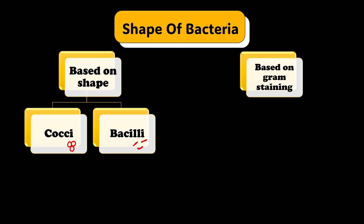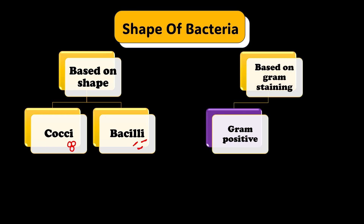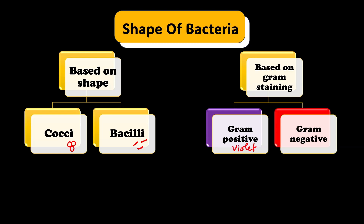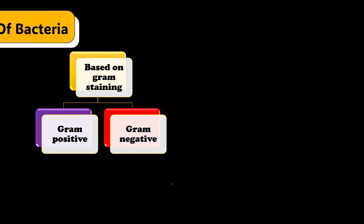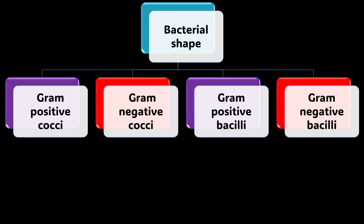We can also classify bacteria based on gram staining. Violet-colored bacteria are labeled as gram positive, while red or pink-colored bacteria are gram negative. Combining the two classifications — shape and gram stain — we get four categories: gram positive cocci, gram negative cocci, gram positive bacilli, and gram negative bacilli.